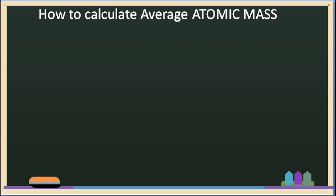Hello! Last video, we used relative abundance of isotopes. Using this relative abundance of isotopes, we will calculate the average atomic mass.